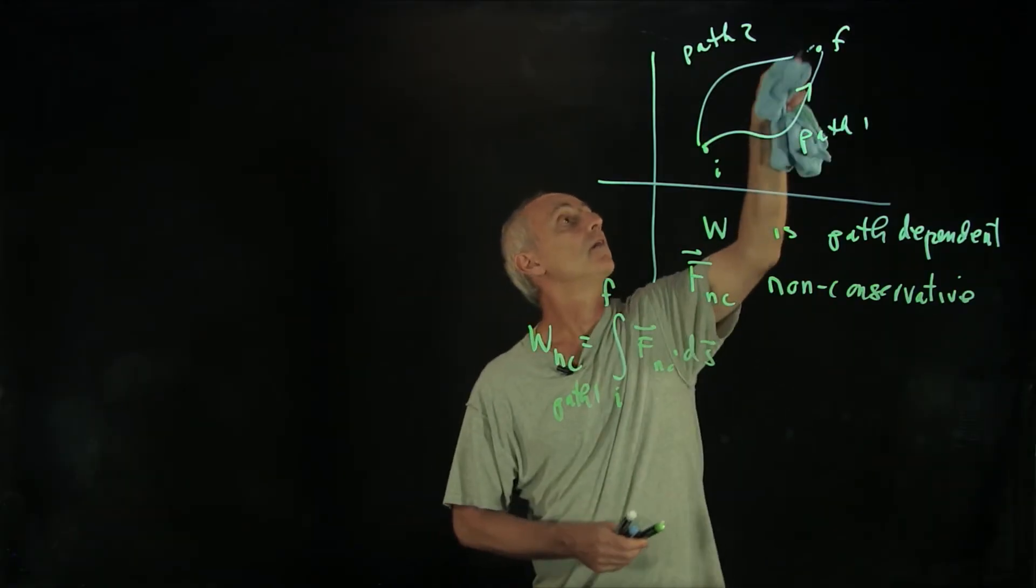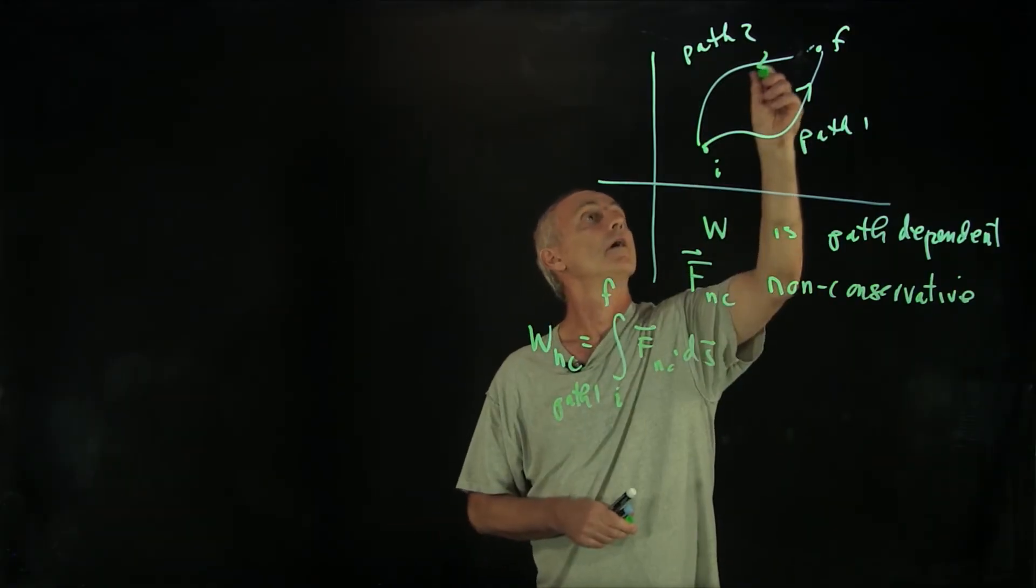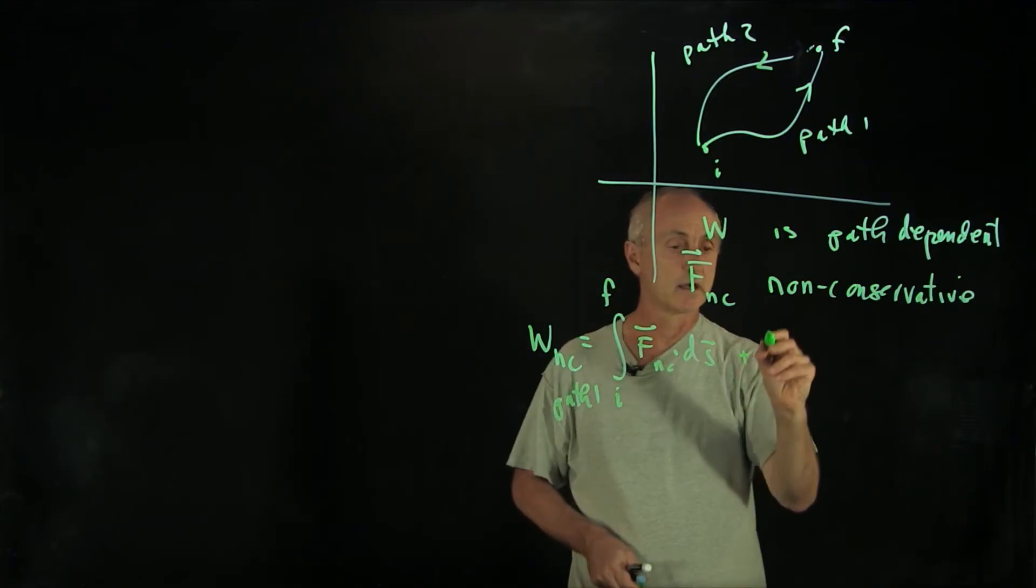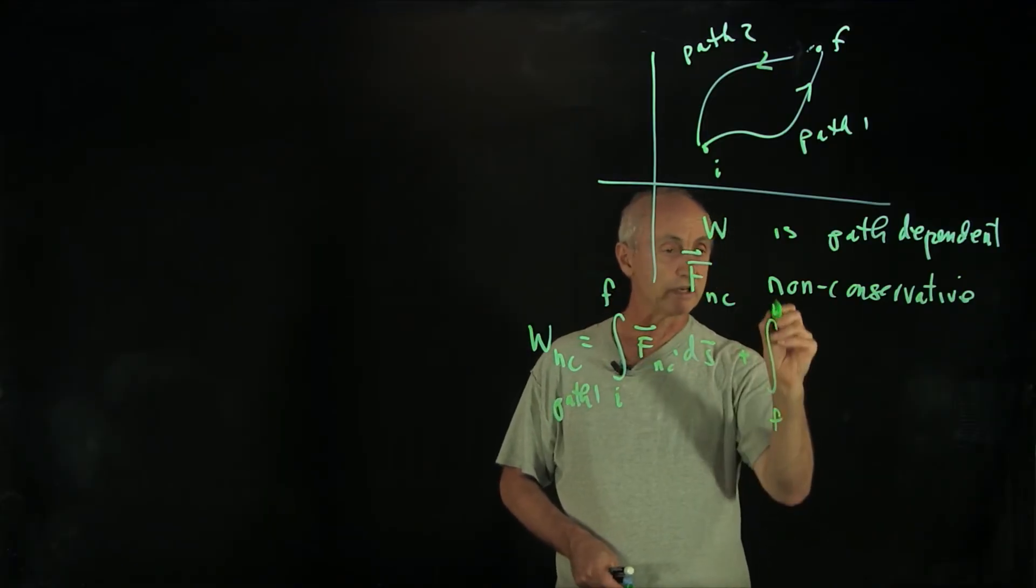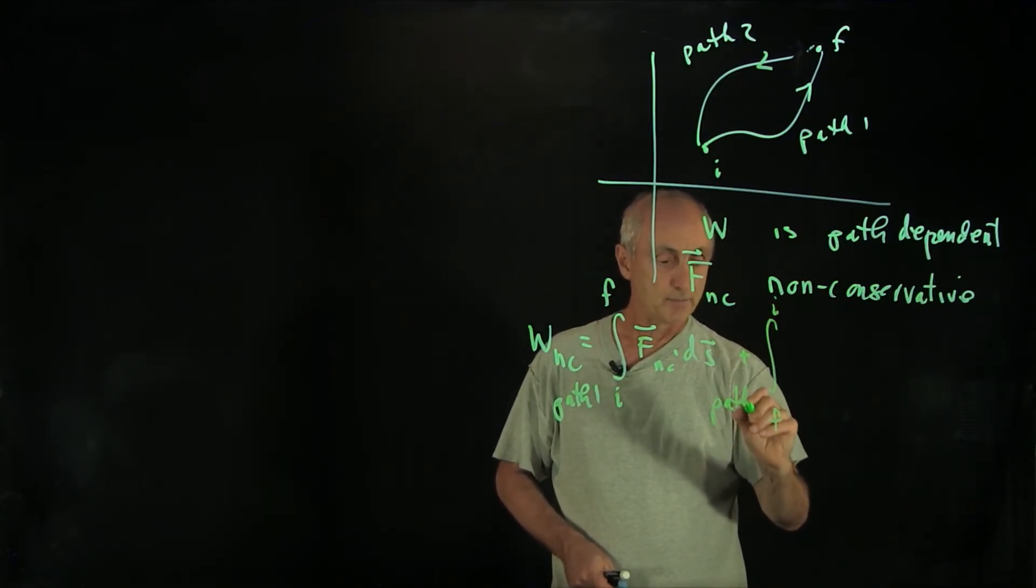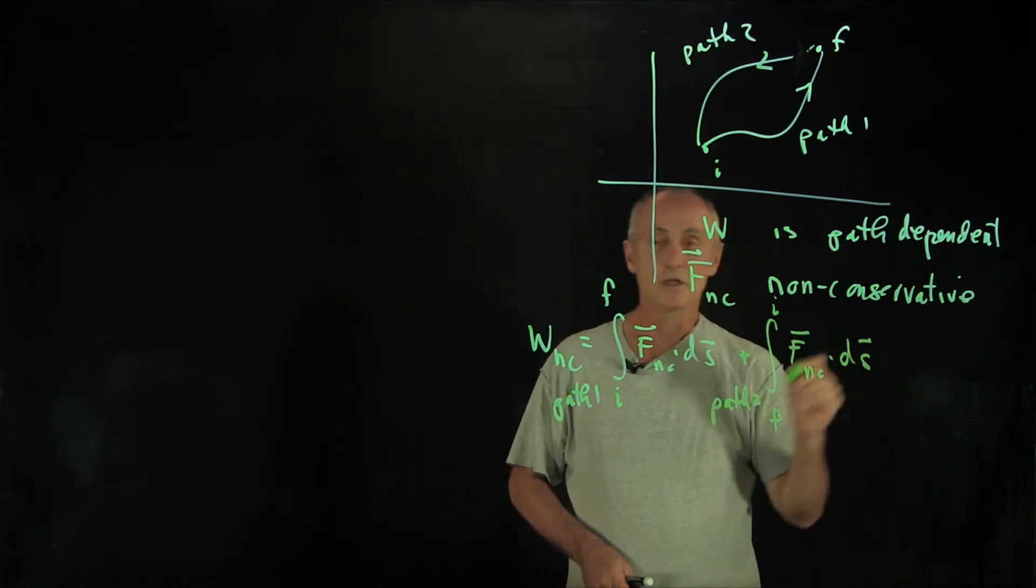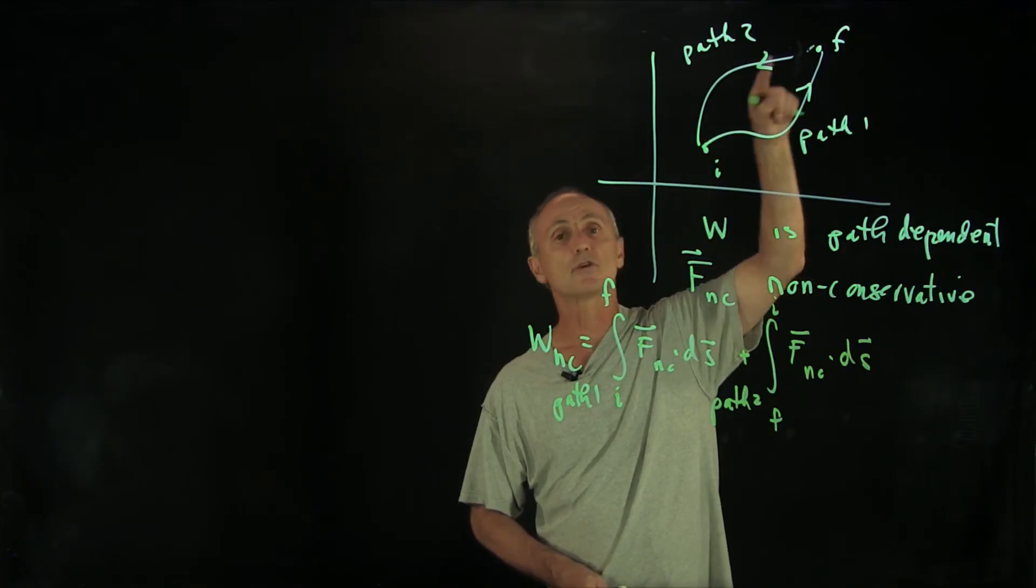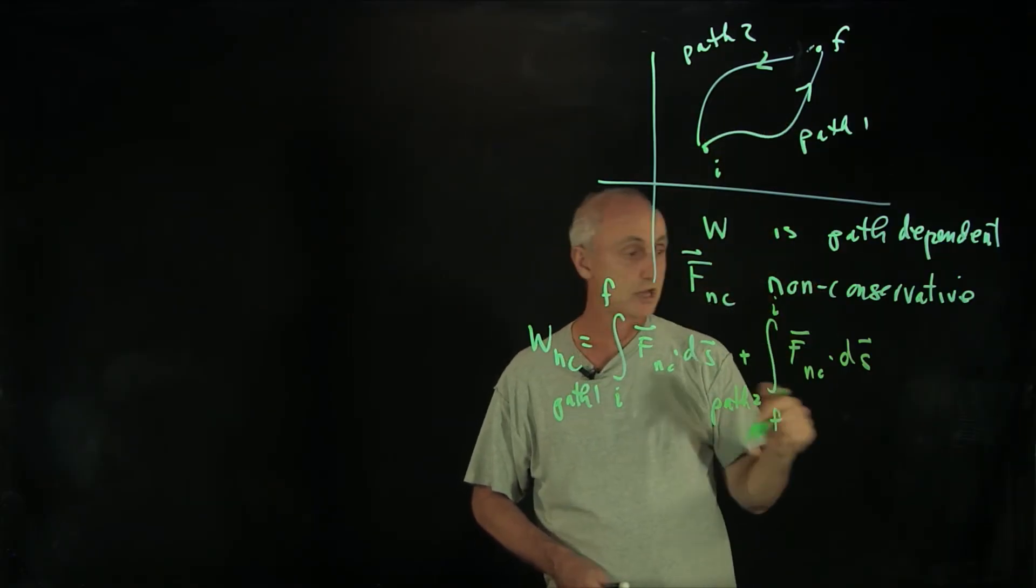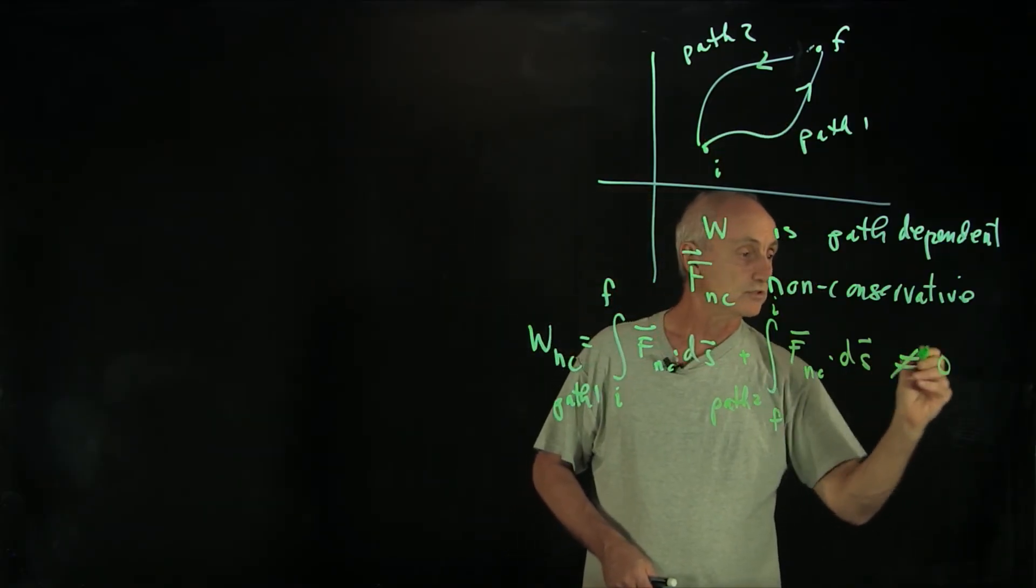And if we reverse the interval and so we go back from the final point to the initial point on path 2, that these integrals will not be equal to the negative of each other because the quantities are different for the different paths in general. And so this is non-zero.